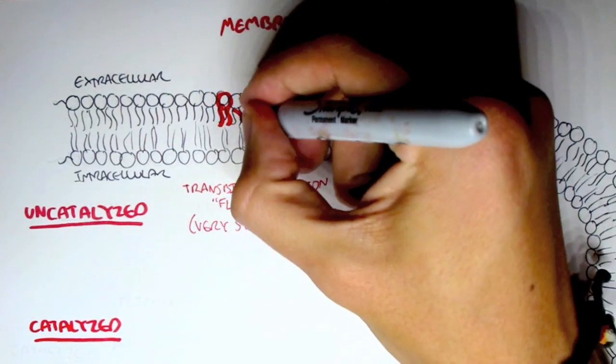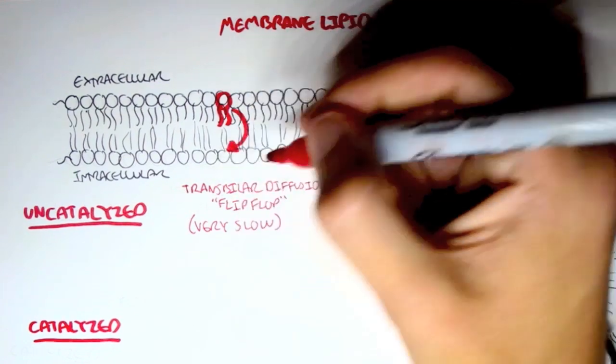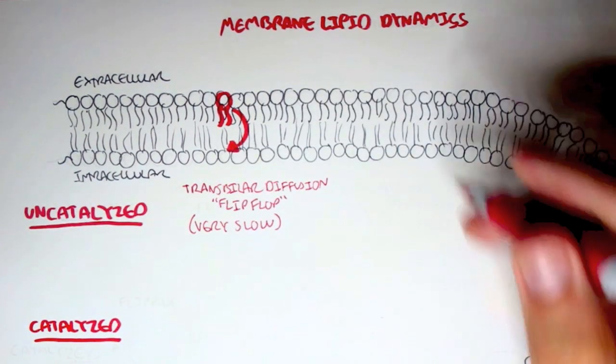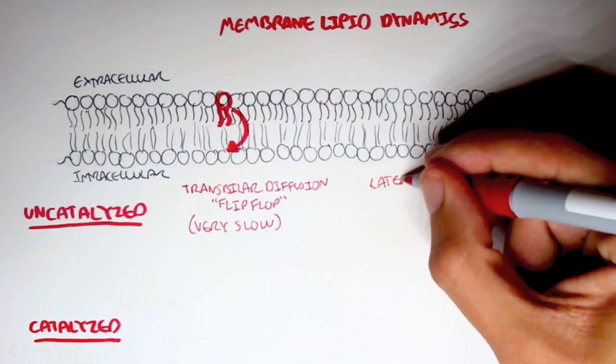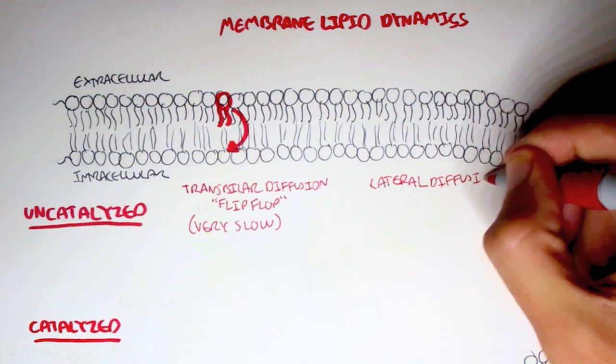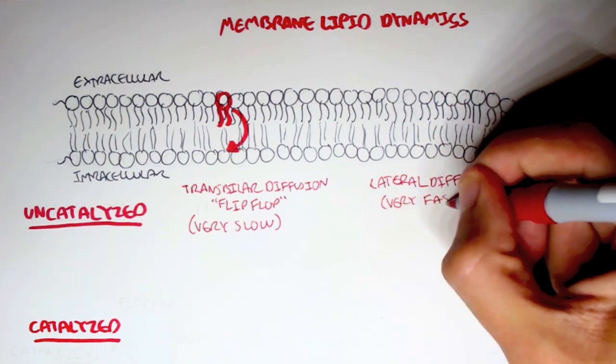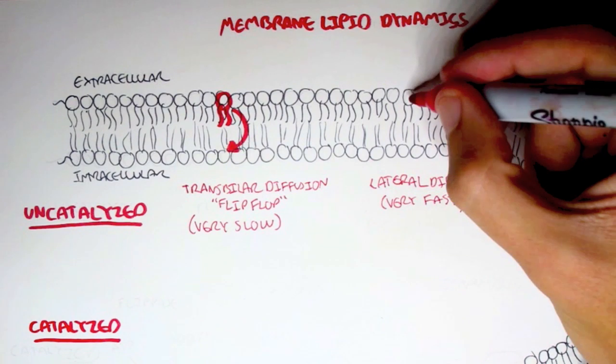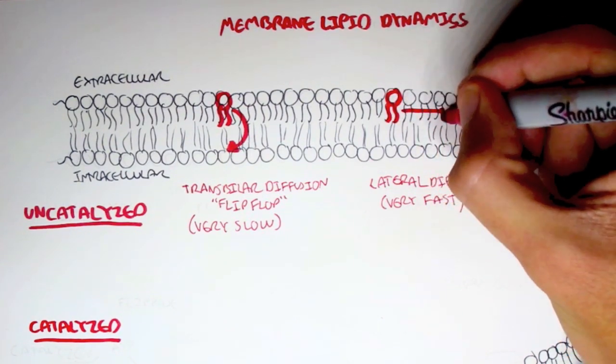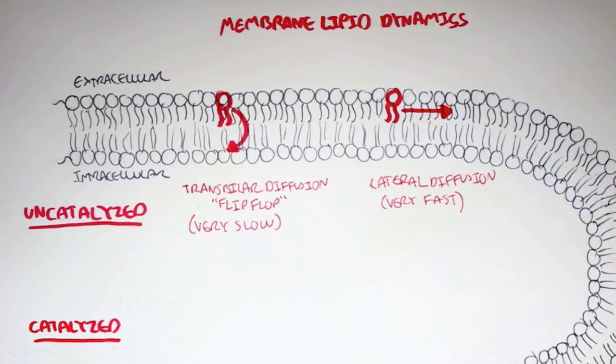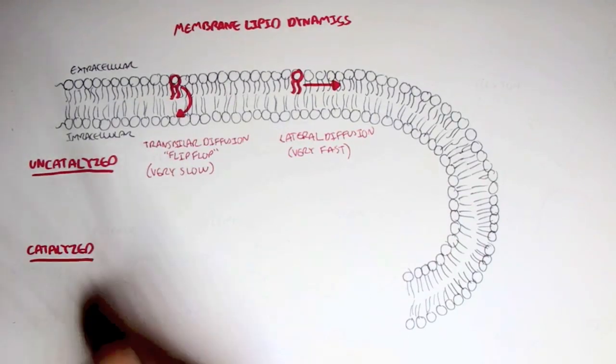This is essentially when a lipid from one layer moves to another layer. The second type of uncatalyzed movement dynamics is what's called the lateral diffusion. And this process is very fast. Because the lipid structure essentially moves within the same plane on the same layer. And that is why it is fast.